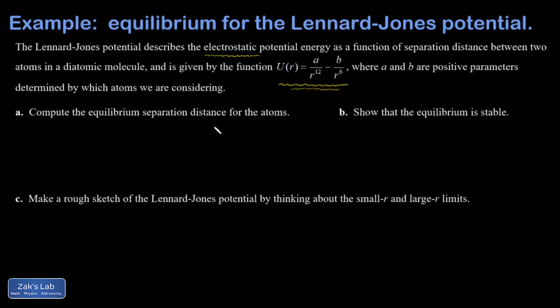So part A says compute the equilibrium separation distance for the atoms. And we're just left with these general parameters A and B, and I at least know that they're positive. So equilibrium, what that means is that the force is zero. But force is given by a negative derivative of this potential energy function.